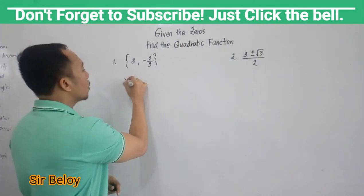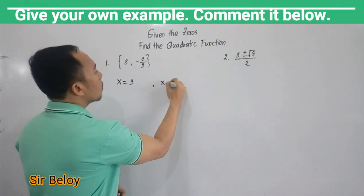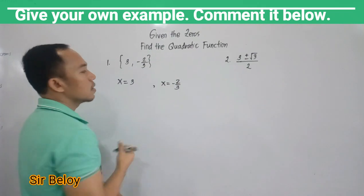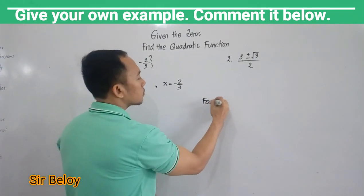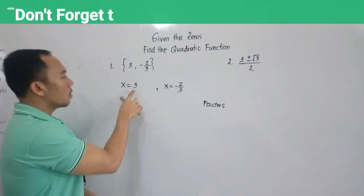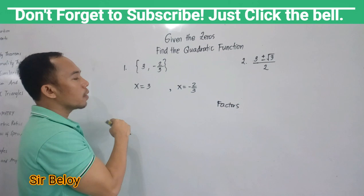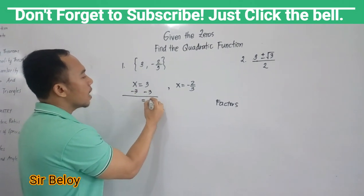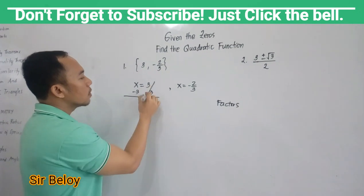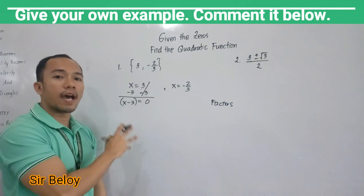make this as factors. So you have two zeros: X equals 3 and X equals negative two-thirds. So make this as factors. So 3 becomes 0 if you're going to make this as factors. So minus 3 both sides. So this is now 0 equals X minus 3. So this is your first factor.